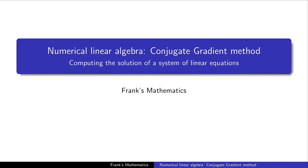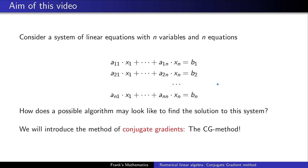We will deal with the following system of linear equations, which contains n variables and n equations, and they are coupled in the following form. The question is how a possible algorithm may look like to find a solution to this system. I will introduce you to the method of conjugate gradients, or in short, the CG method, which is a very famous method for solving such a system, if the coefficients A satisfy a specific form, but we'll come to this later.